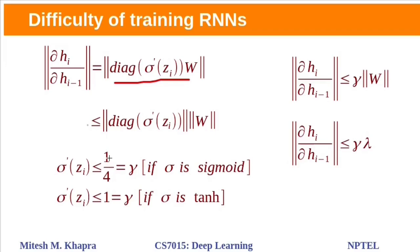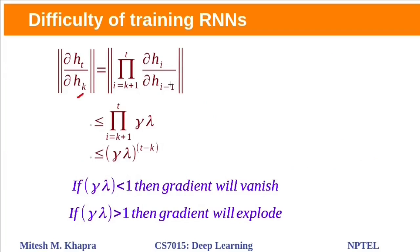So it can be written as 1 by 4, tanh upper bound is 1 and let us call this upper bound as gamma. And this weight matrix is also bounded. Let's call this magnitude as lambda. So this norm value is less than or equal to lambda into gamma.